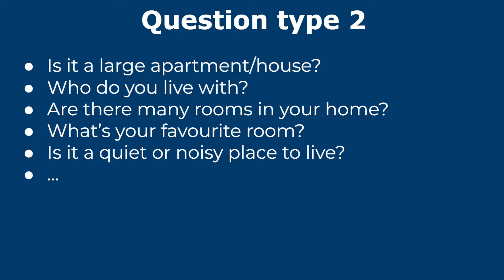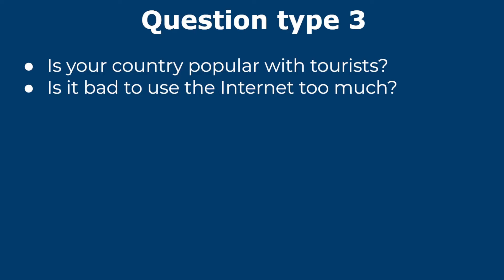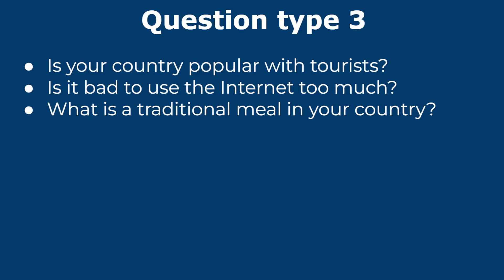Question type 2 consists of follow-up questions on a single topic. For example, starting from 'where do you live?', the examiner might ask: is it a large apartment or house? Who do you live with? Are there many rooms? What's your favorite room? Is it a quiet or noisy place to live? These go a little deeper into the conversation and ask more detailed questions.